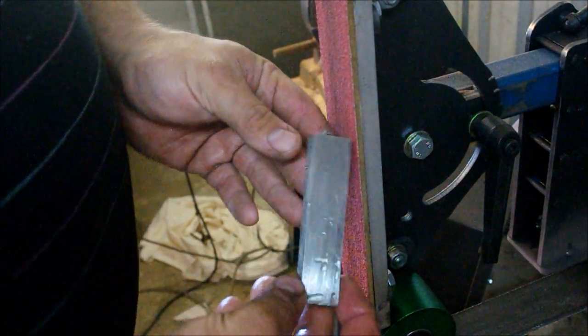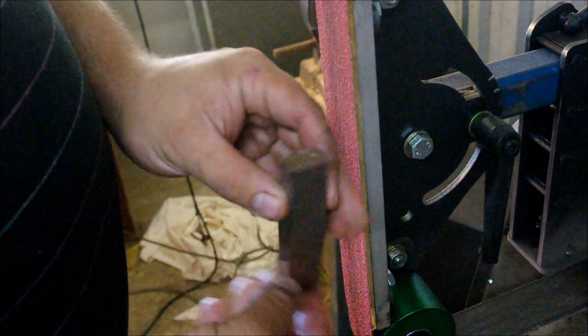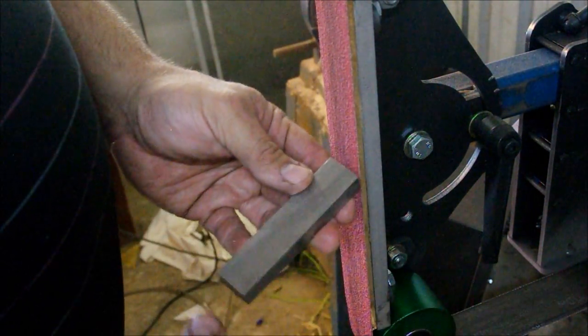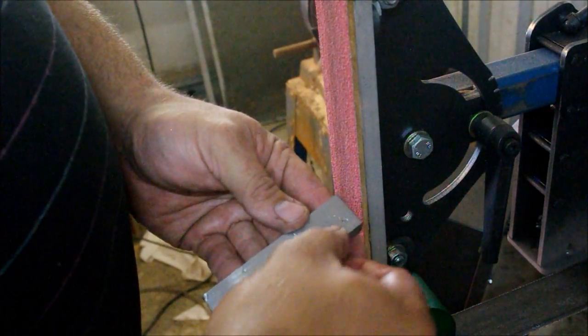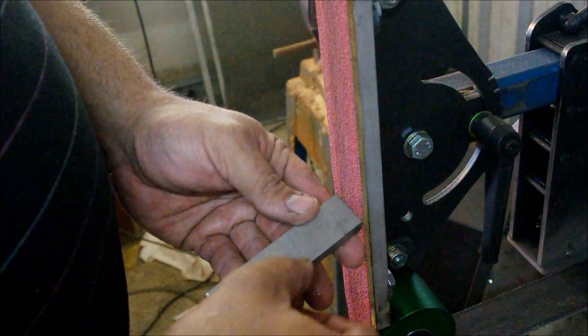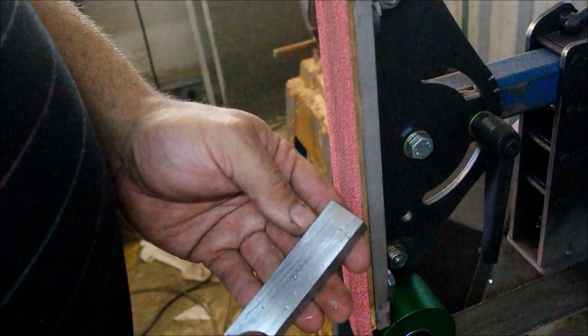So as you can see, I've used the grinder to just square everything off and flatten all of the faces to give me something to index off when I do my marking out. Because now I've got to go and mark where the tang slot is going to be cut and then we'll come back.